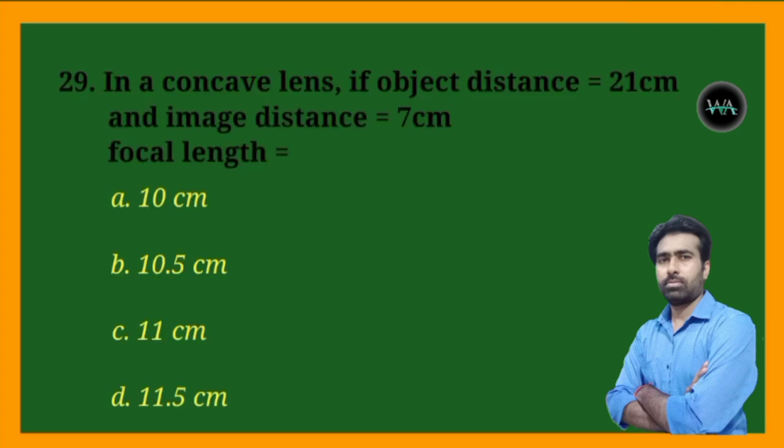Next question: in a concave lens, if object distance u = 21 cm and image distance v = 7 cm, find the focal length.